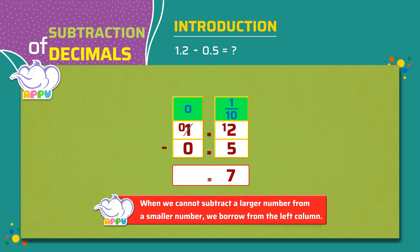We place the decimal point. Since we borrowed the 1 from 1, the 1 has become 0. So when we subtract 0 from 0, we get 0 in the ones place. The answer is 0.7. So 1.2 minus 0.5 is equal to 0.7.